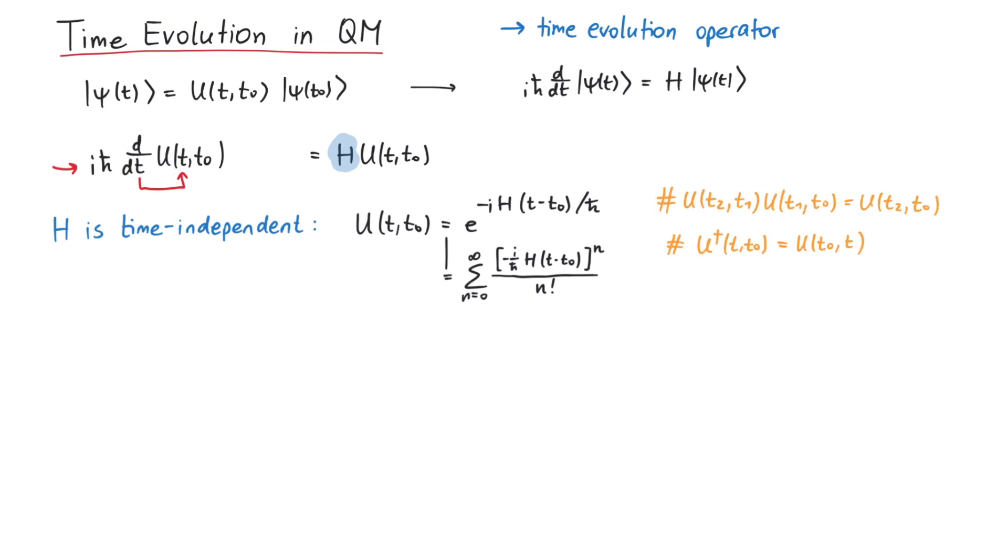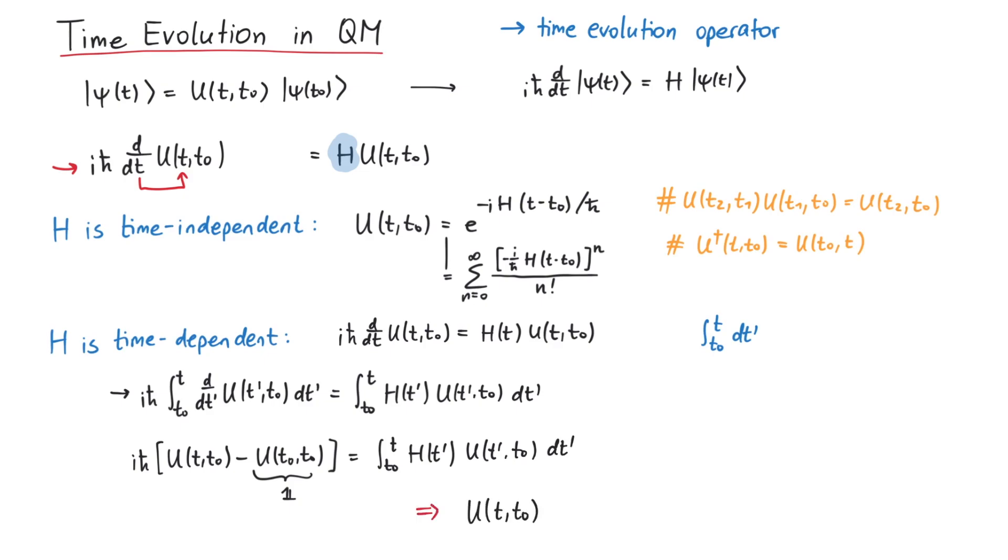Next, what if the Hamiltonian depends on time? In this case, we have to perform the integration very carefully, and arrive at a recursive relation for u. This means that, in order to solve it, we would have to substitute the whole expression for u on the right side again and again. It looks complicated, but this equation is very useful in quantum field theory.